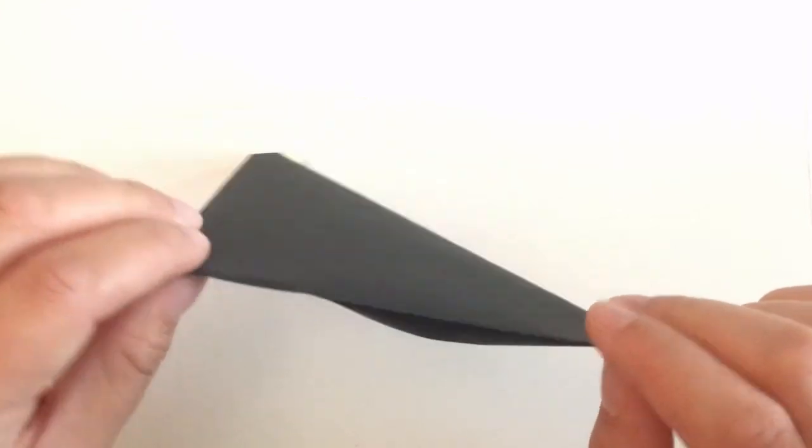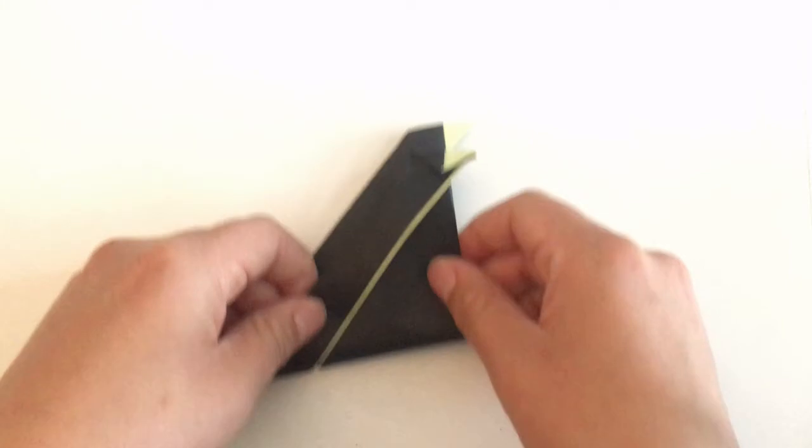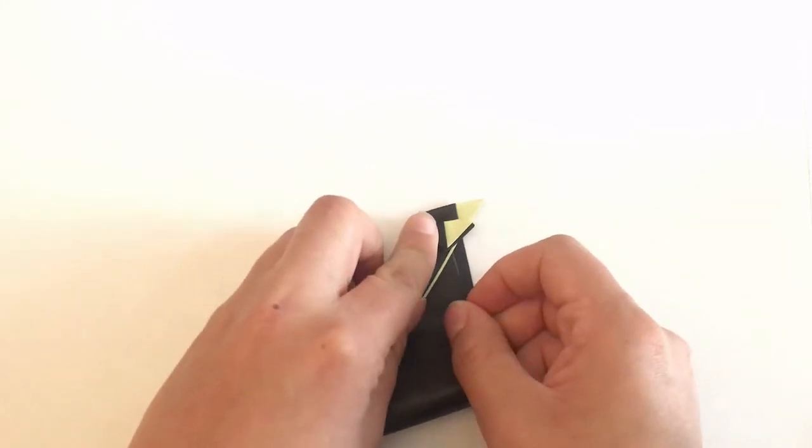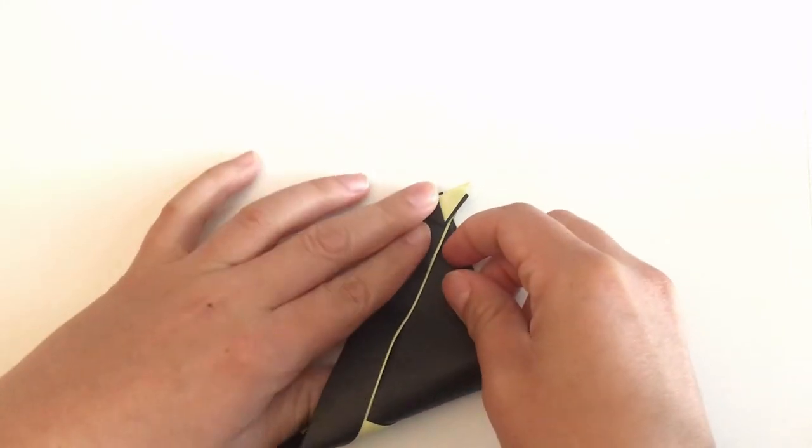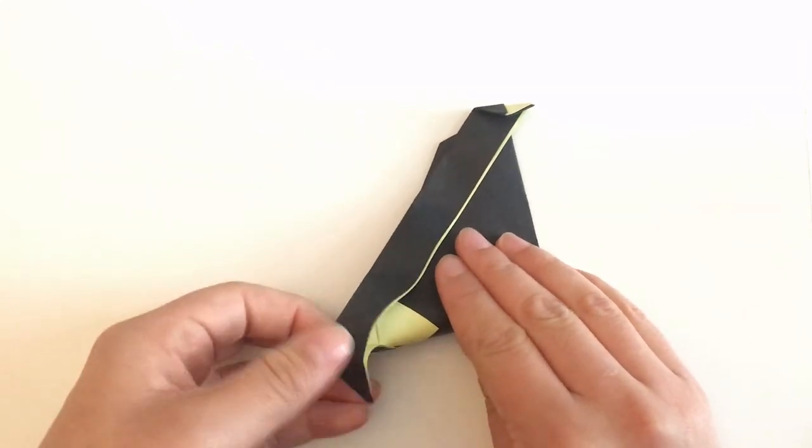Now we fold the triangle in half like this, matching up the halfish diamonds. Then we make a crease. Both sides must match up perfectly.